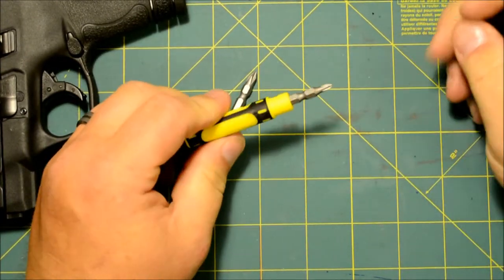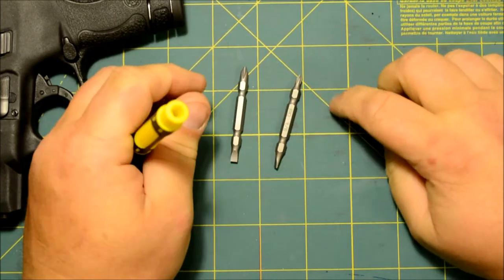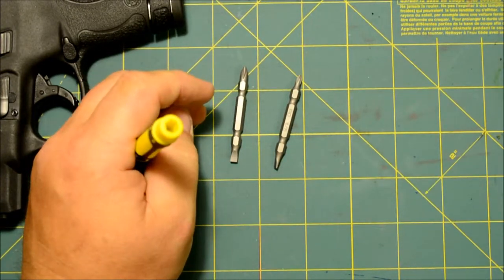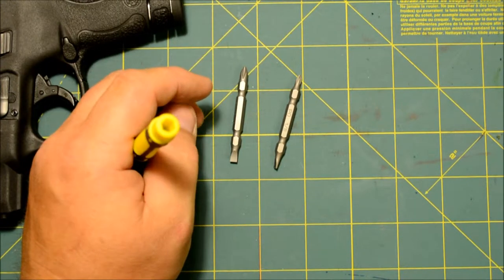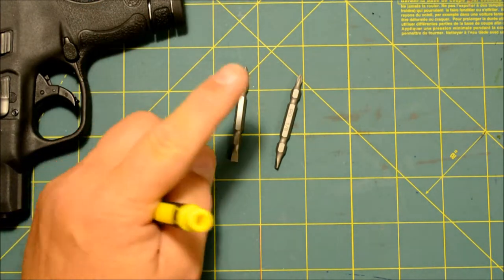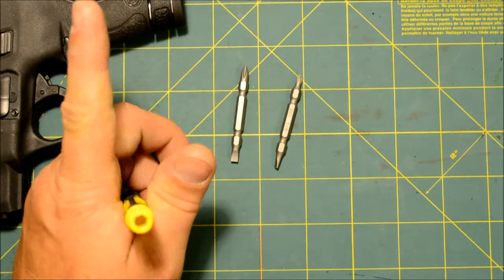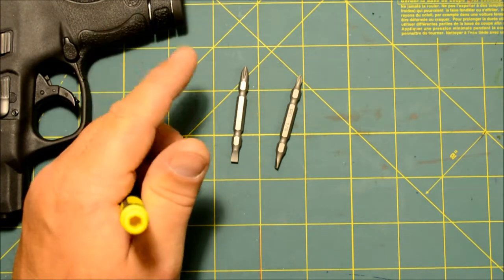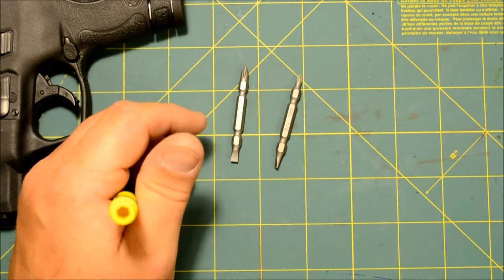You got a small and a large. I believe the sizing says zero-point and one-point, and then on the slotted it's 5/32 and 1/8 of an inch. The Stanley product number is 66-344.